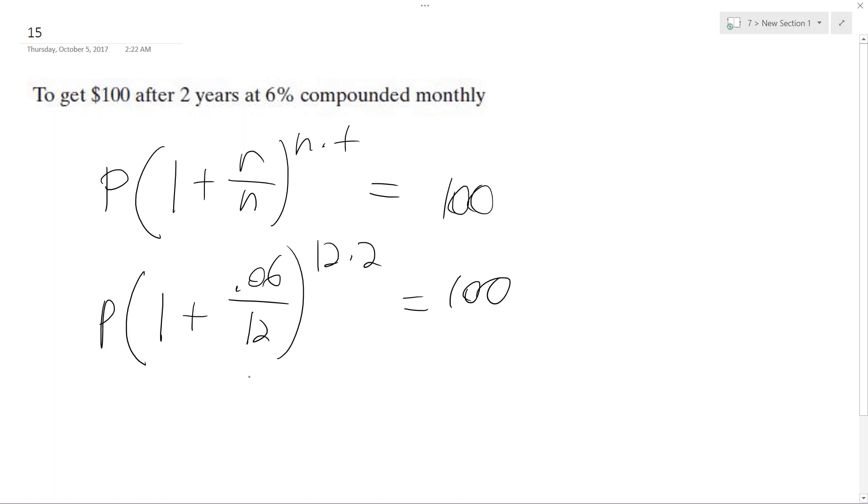What we end up with here is, let's keep doing this, and then p is equal to 100 divided by 1 plus 0.06 divided by 12 raised to 24. And we get approximately, our principal amounts, $88.72.